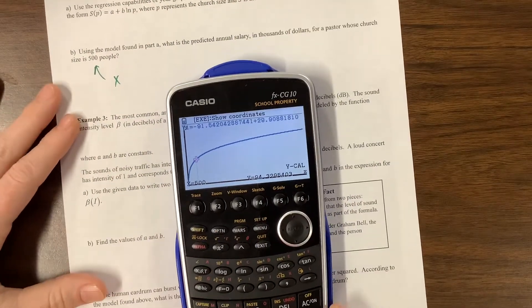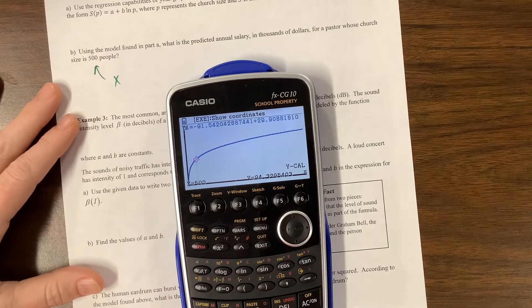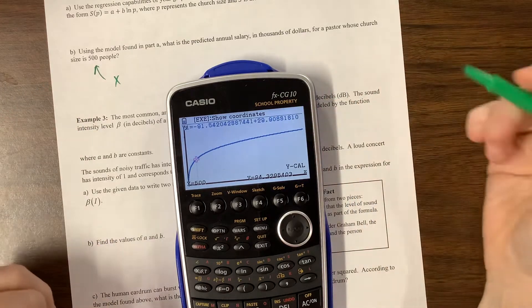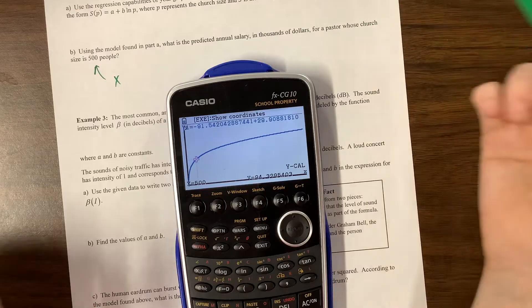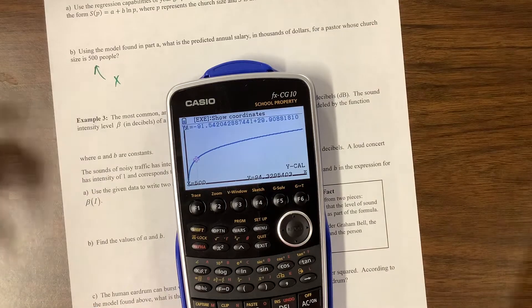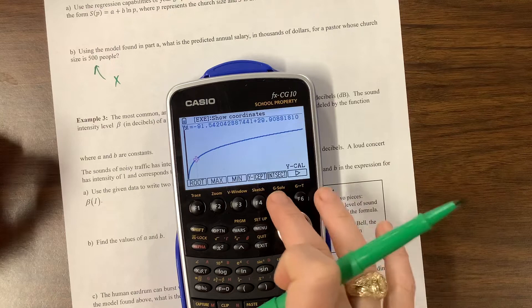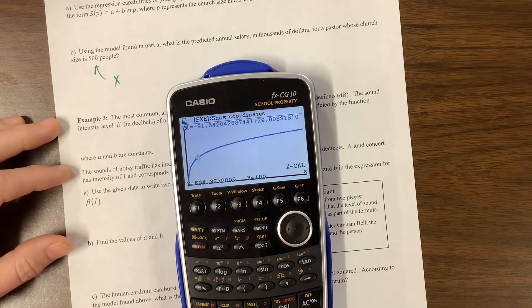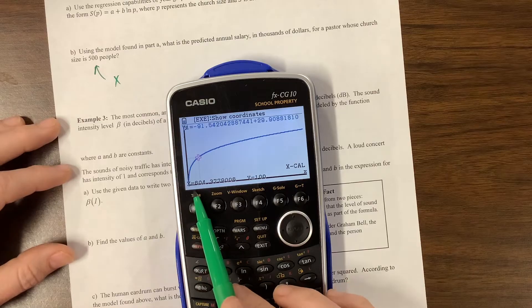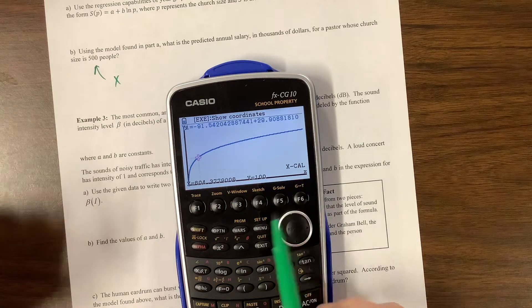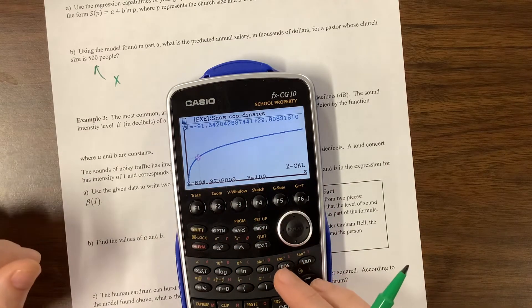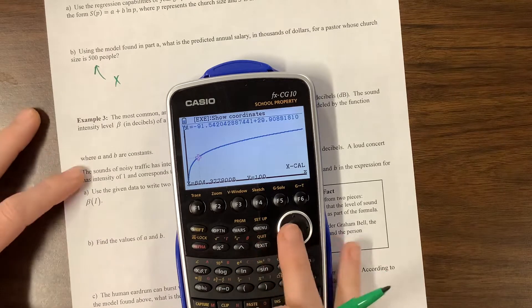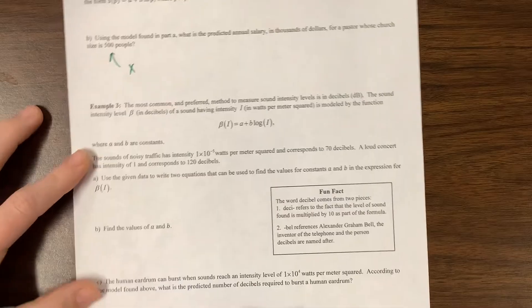So the predicted salary for a pastor whose church size is 500. There could be the question of how big of a church do you expect if a pastor makes $100,000? So then we can do G-solve and we can come over and do X-cal. And so we're saying he makes $100,000, and we'd expect him to have 604-ish. Is this people? Families? I don't know. What's the size of the church? Very good. Let's keep going.